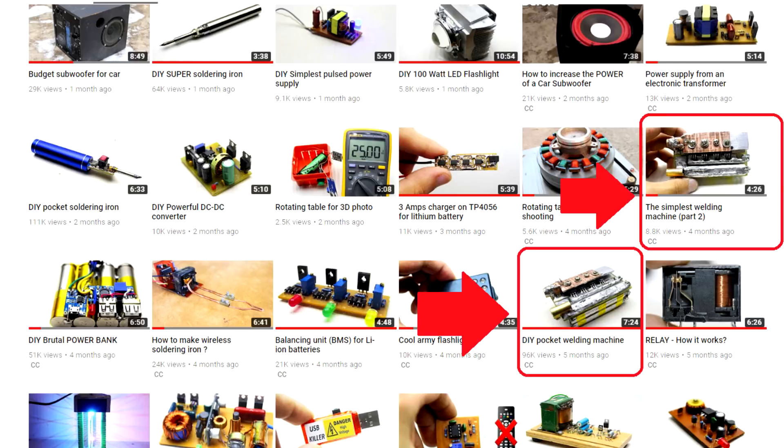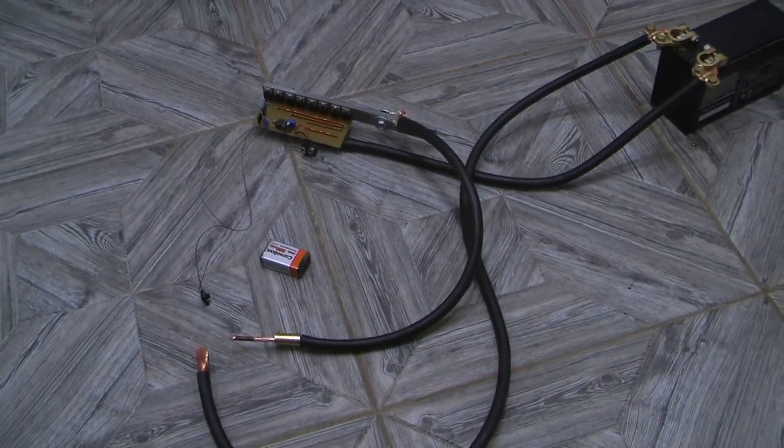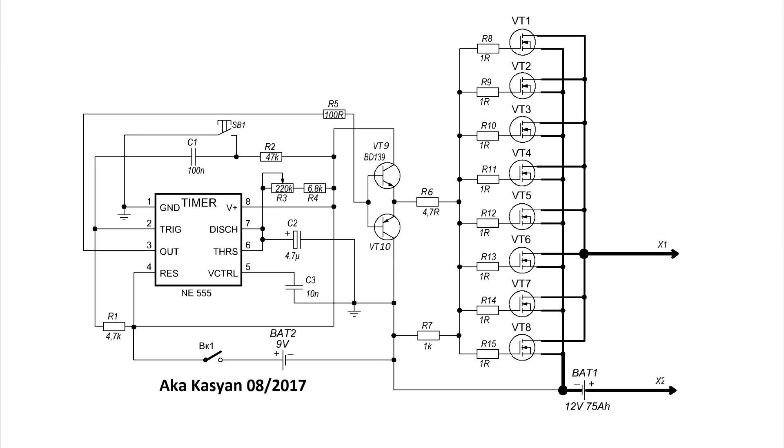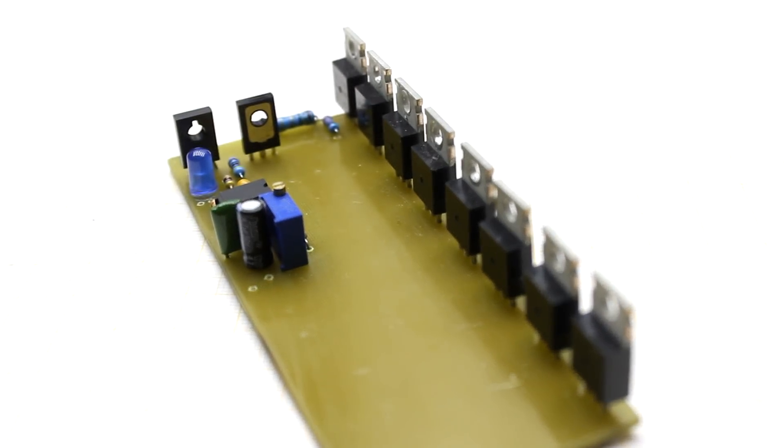A while ago I published a couple of videos with the assembly of contact welding machines, but I hadn't time to make the full functional and powerful spotter. I must say that in this video I will talk about the principle of the circuit, the choice of accessories and other details related to the device.